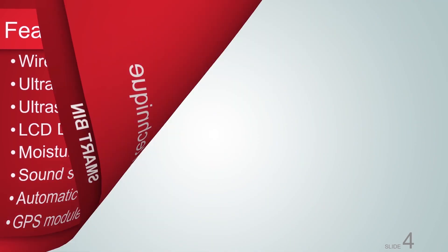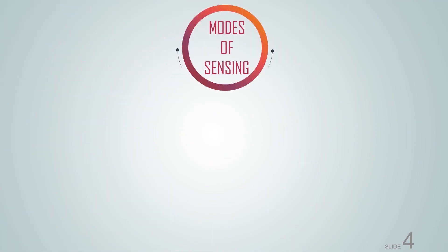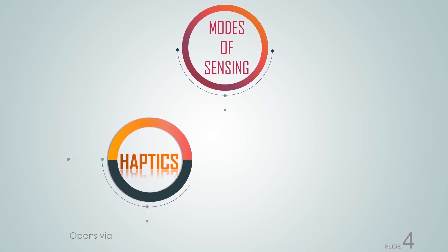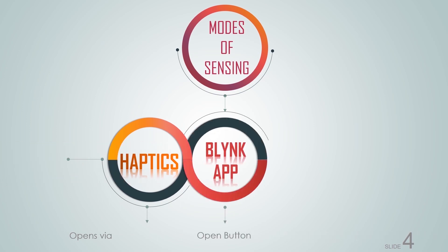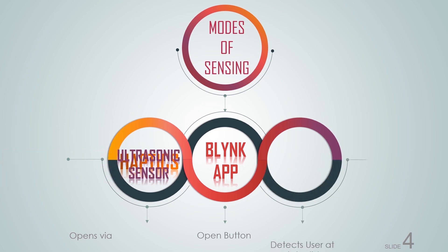The diagram shows the main sensors that are going to be used and how they are going to be operated. As mentioned in the aim and objective, the lid will open and close based on three operations: an app, sound, and ultrasonic sensor. The next slide will show the operation of each sensor.